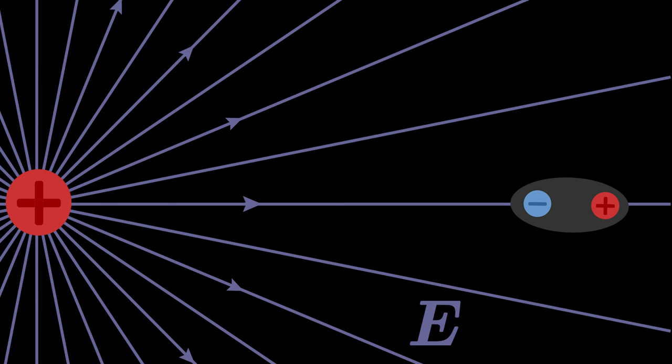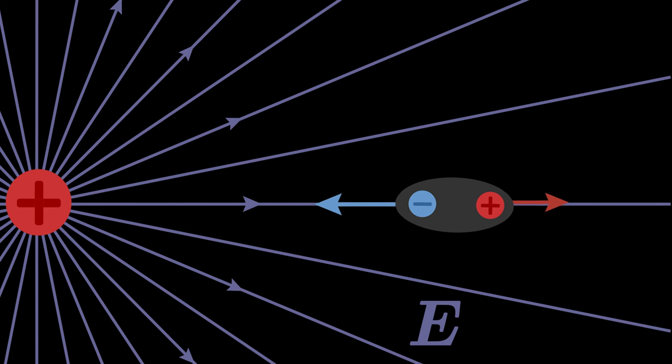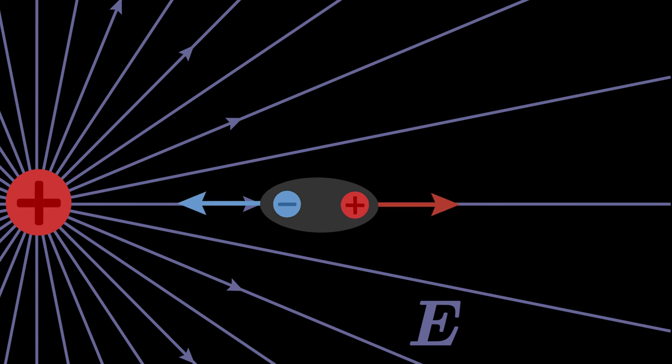But something else happens in the inhomogeneous electric field besides rotation. The positive and negative charge of the electric dipole experience a different force along and against the field lines. To bring the two forces into equilibrium, the dipole shifts in the inhomogeneous electric field.